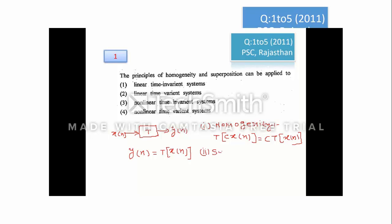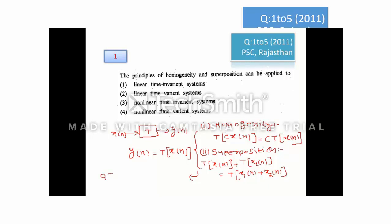The second property is superposition. To test it, two inputs x1(n) and x2(n) are given to the system, producing two separate outputs. If the combined output satisfies a·T{x1(n)} + b·T{x2(n)} = T{a·x1(n) + b·x2(n)}, then the system follows the superposition property. If both homogeneity and superposition hold, the system is a linear time-invariant (LTI) system.